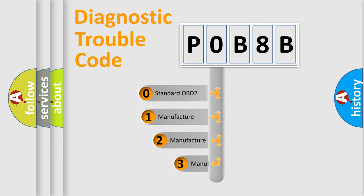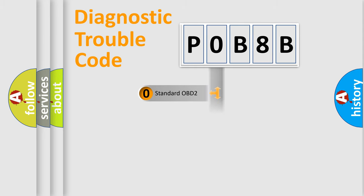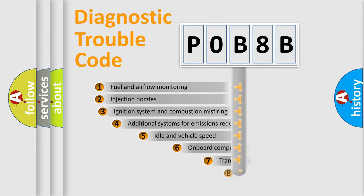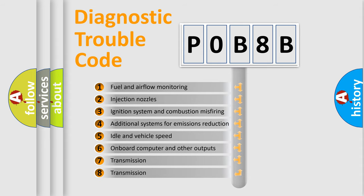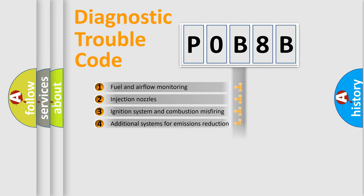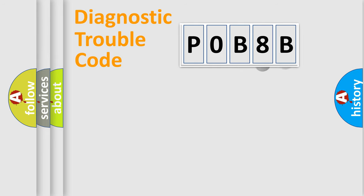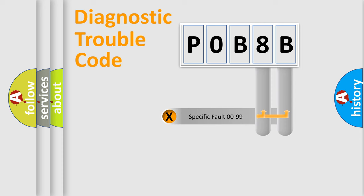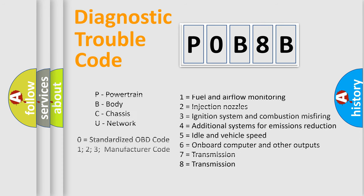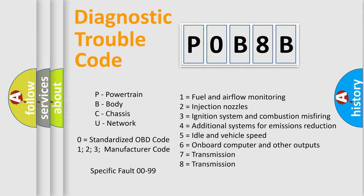If the second character is expressed as zero, it is a standardized error. In the case of numbers 1, 2, or 3, it is a more specific expression of a car-specific error. The third character specifies a subset of errors. This distribution is valid only for the standardized DTC code, and only the last two characters define the specific fault of the group. Such a division is valid only if the second character code is expressed by the number zero.